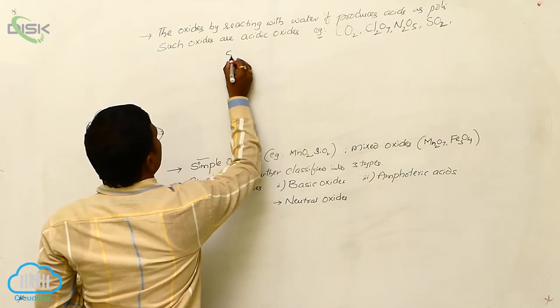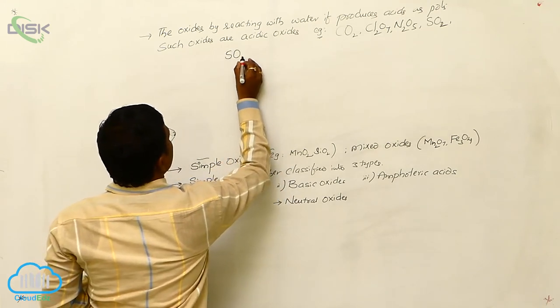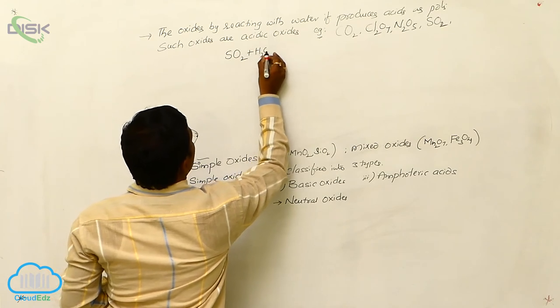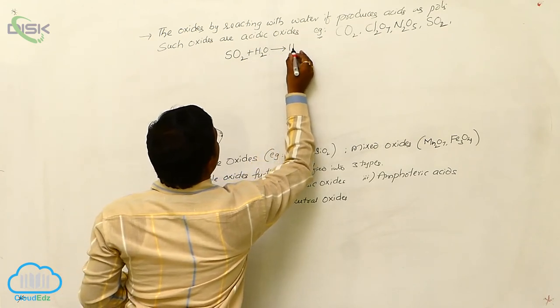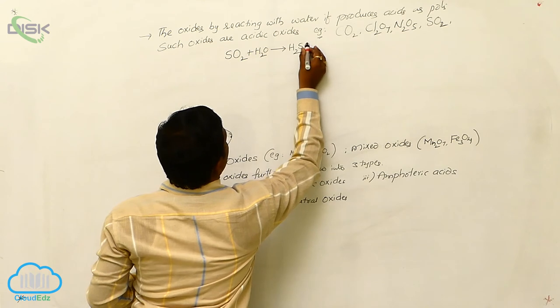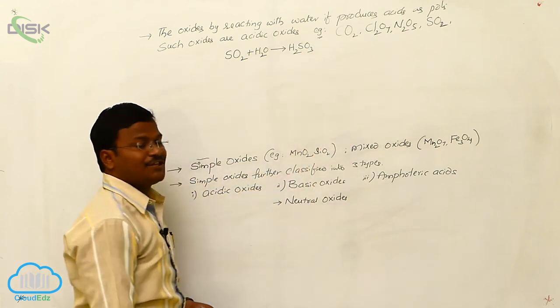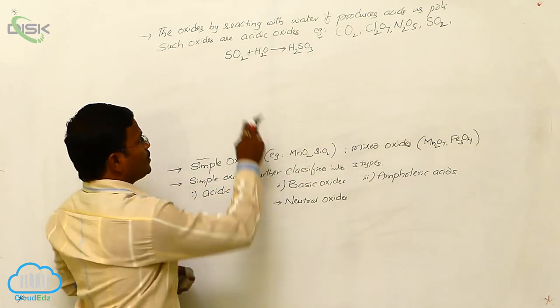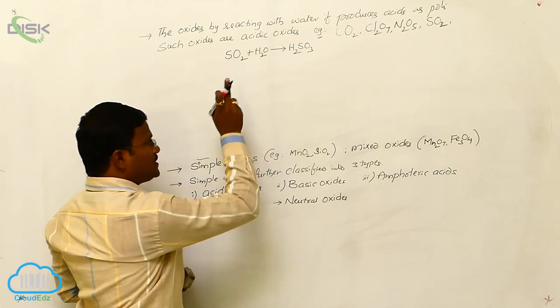When sulfur dioxide treated with water, it produces sulfurous acid having the molecular formula H2SO3. It means, sulfur dioxide is an oxide. By reacting with water, it produces sulfurous acid.